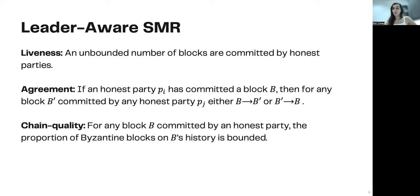Formally, leader-aware state machine replication provides the following properties. The liveness property states that an unbounded number of blocks is being committed by honest parties. Secondly, agreement property states that if an honest party pi has committed a block b, then for any other block b prime committed by any possibly other honest party pj, either b prime extends b, or b extends b prime, meaning that they extend the same chain, basically.